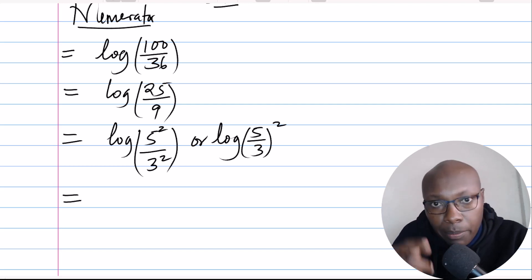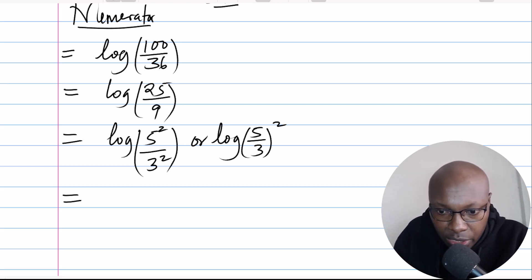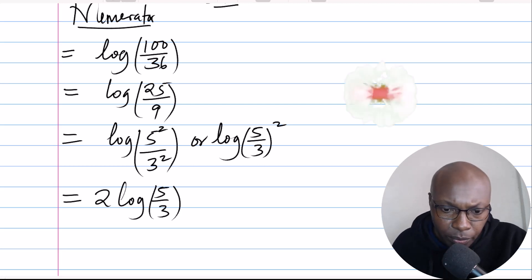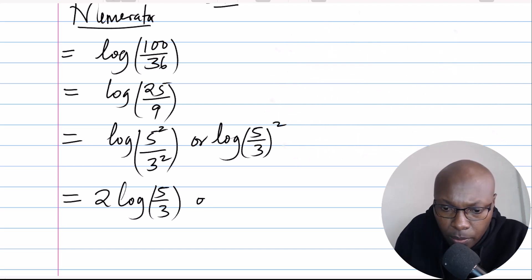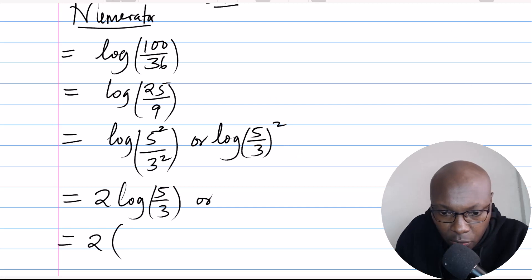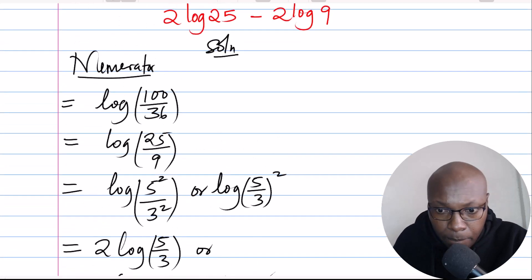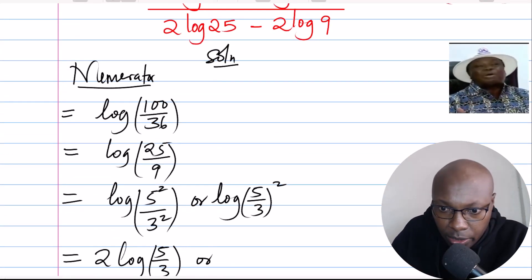Applying another basic law of logarithms, log of (5/3) squared can be simplified: the power jumps down, giving 2 log of 5 over 3. You can leave it at that point, or write it as 2 into brackets, where log of 5 divided by 3 becomes log of 5 minus log of 3. That is the numerator.